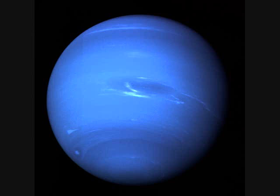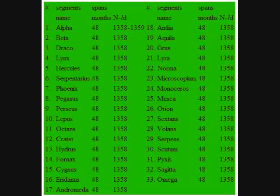1,775.09 Mars souls or 1,358.55 by-souls, divided into 48 months of 28 to 29 by-souls each. Regular segment: 1,358 by-souls. Irregular segment: 1,359 by-souls. Common year: 33 segments regular. Leap year: 32 segments regular, one segment irregular.